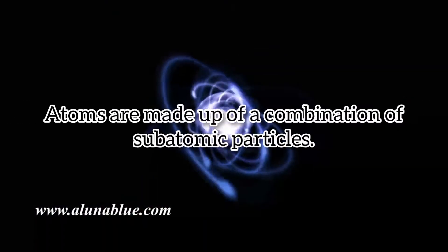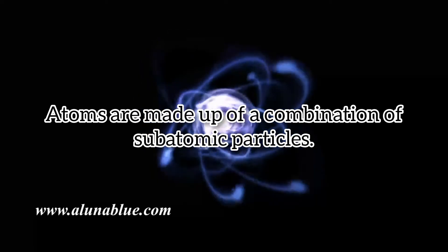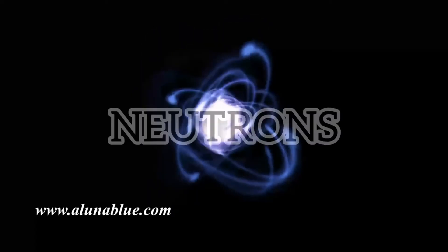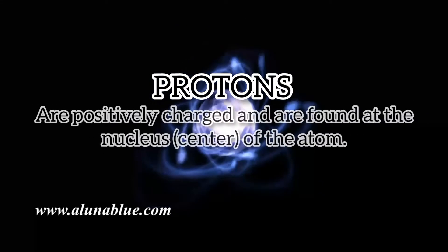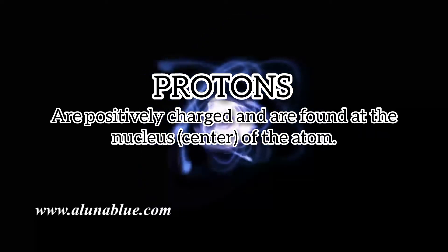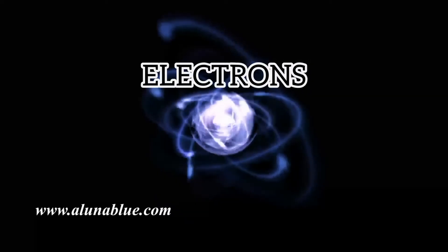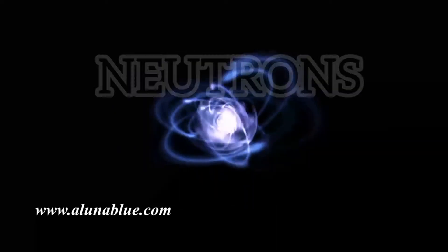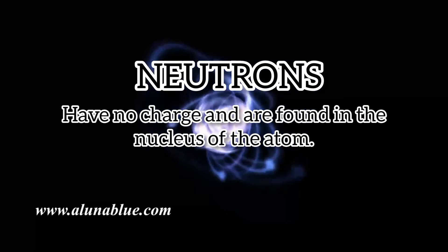Since metabolism involves chemical reactions, it is useful to review some basic concepts of chemistry. Atoms are made up of subatomic particles: protons, electrons, and neutrons. Protons are positively charged and are found in the nucleus of the atom. Electrons are negatively charged and are found on the outer portions of the atom. Neutrons have no charge and are also found in the nucleus of the atom.